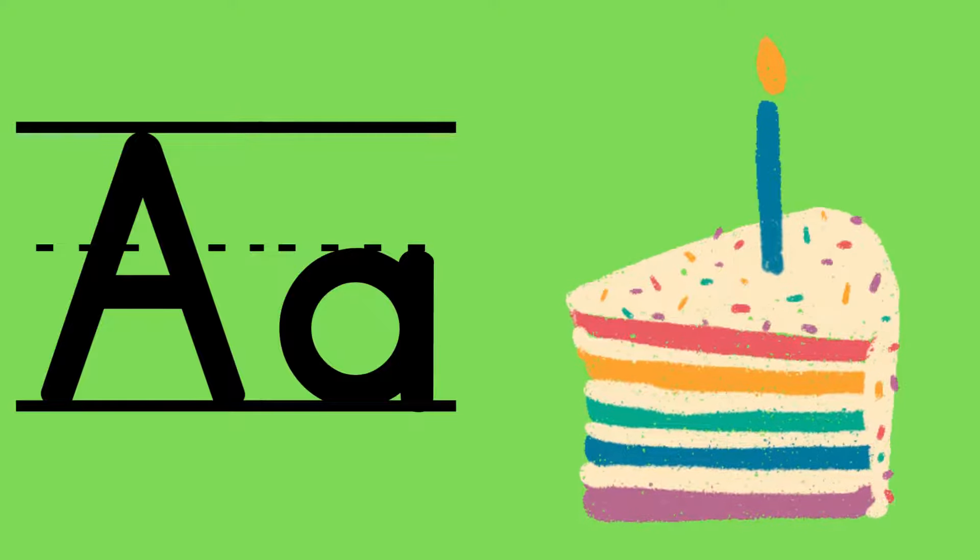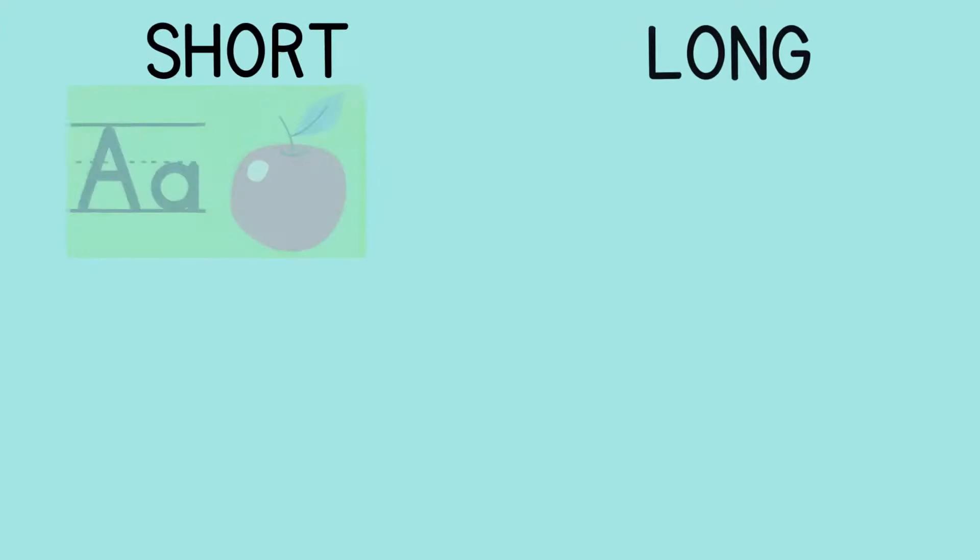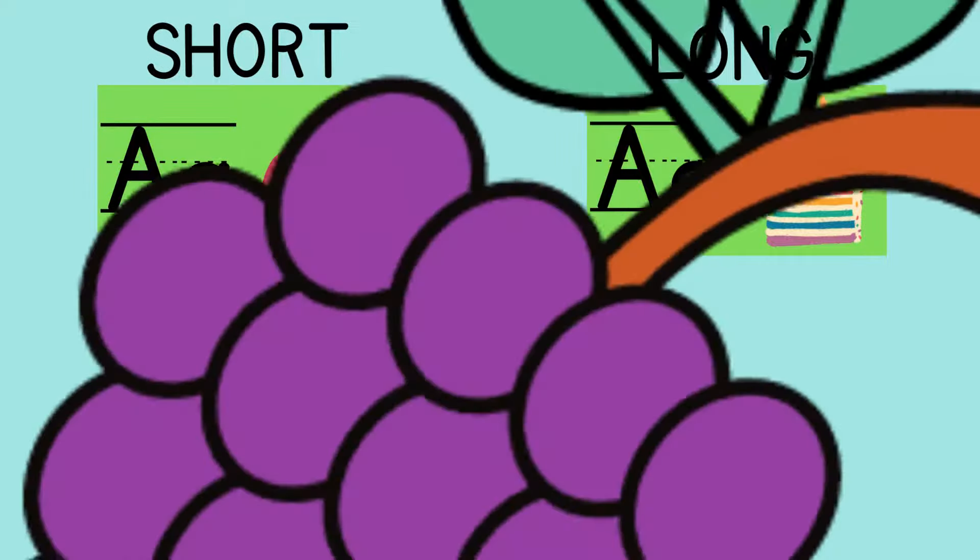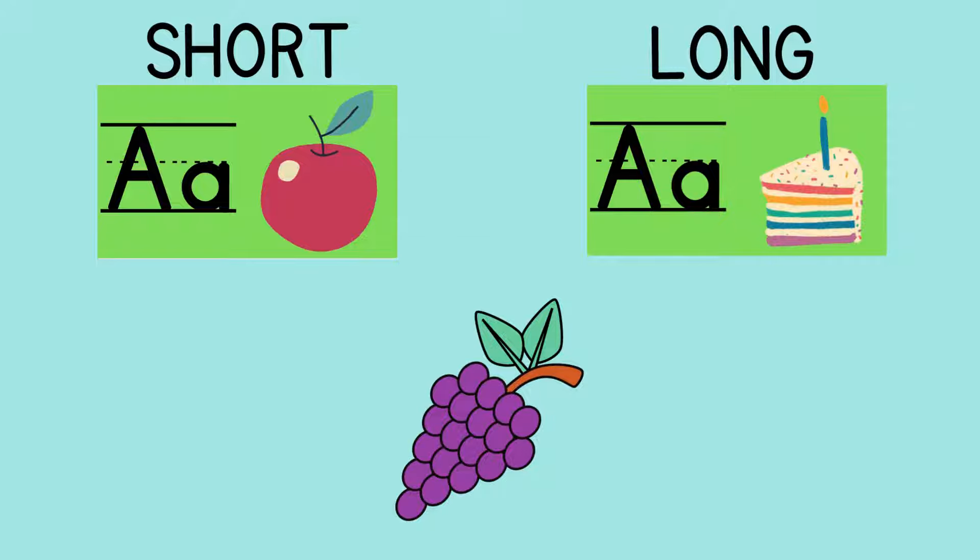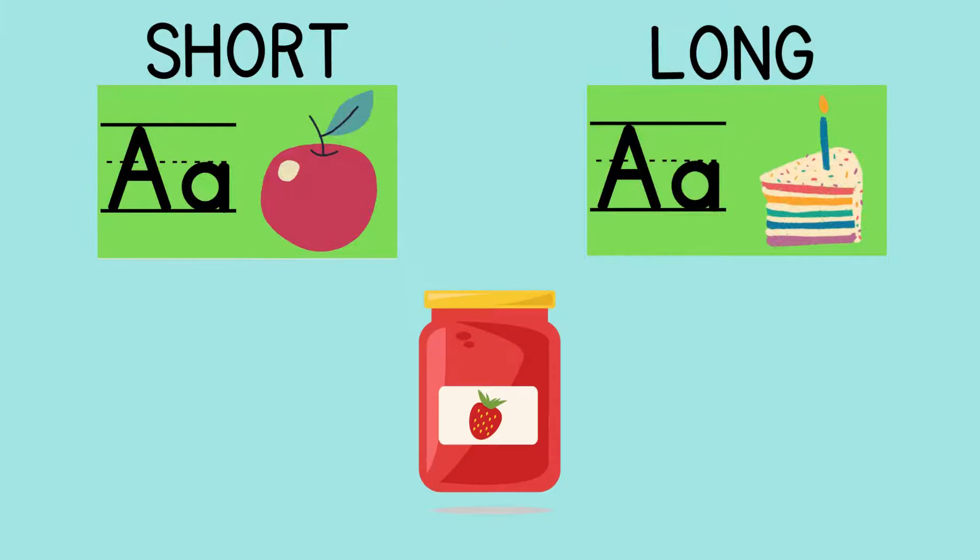Let's sort some short and long sounds for A. Grape - I hear 'ā', grape, so that one has the long A.